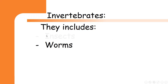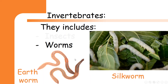Invertebrates also include worms, like the earthworm and the silkworm. The earthworm lives inside the earth, and the silkworm lives on the raspberry tree. This worm lives on the raspberry tree and makes silk — the silk that we use to make textiles.